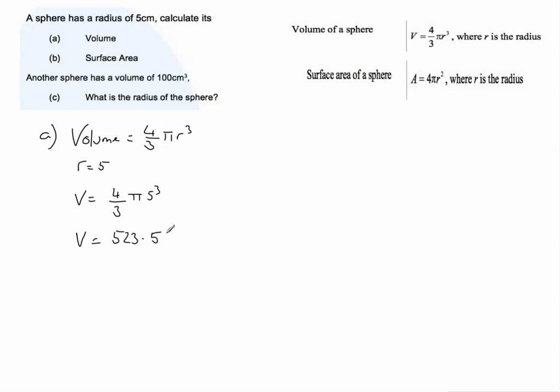And then underneath to round your answer to three significant figures, which is rounding to 524 centimeters cubed, taking care to be consistent with the units of the question. For part B,